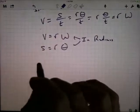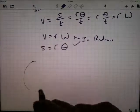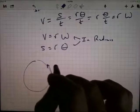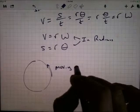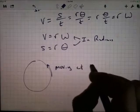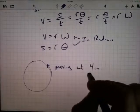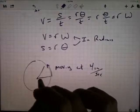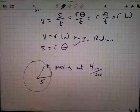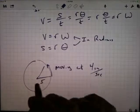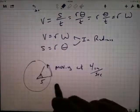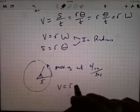A quick example here or two. Suppose I've got a circle and I've got a particle moving along the circle, moving at four inches per second, and I've got a circle here of radius five. How does four inches per second change into an angular measure?